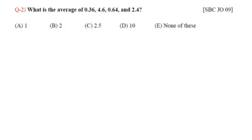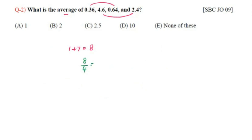Question number 2: What is the average of 0.36, 4.6, 0.64 and 2.4? Average equals sum divided by number of terms. The sum: 0.36 plus 0.64 equals 1, and 4.6 plus 2.4 equals 7. Total sum is 8. Average equals 8 divided by 4, which is 2. So option B, 2, is the answer.